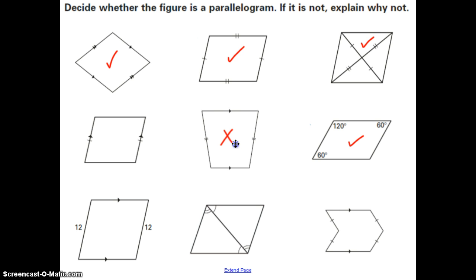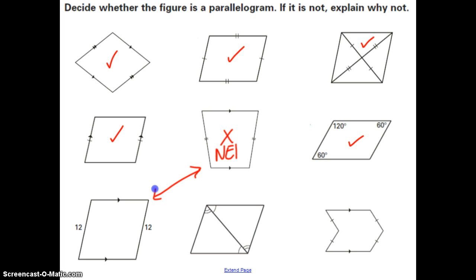This one is not a parallelogram. Be careful — this diagram shows one pair of opposite sides that is parallel, but the other pair of opposite sides are congruent. That doesn't give you enough information. We can say NEI — not enough information. This next one is a parallelogram because of the last property: one pair of opposite sides is both congruent and parallel, which makes it a parallelogram. This diagram also has one pair of opposite sides parallel and one pair congruent — even though it looks different, the information is exactly the same, so again, not enough information.